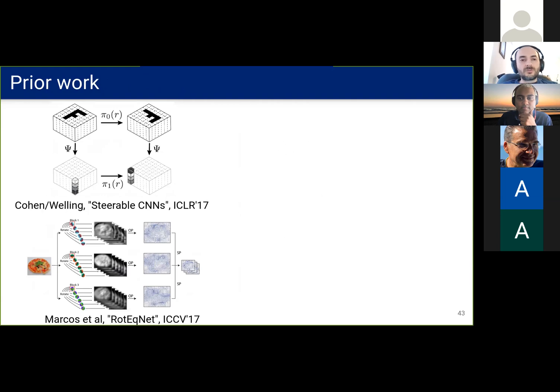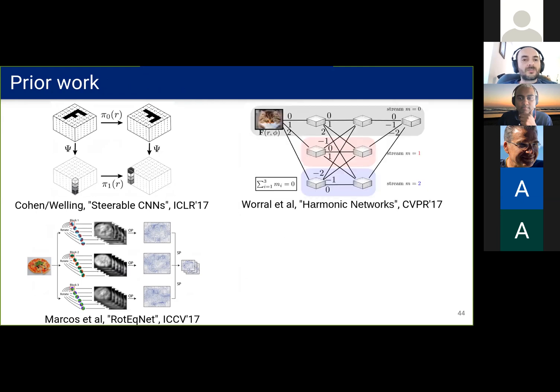Before showing results, let's see some prior work on CNNs for vector fields. Cohen and Welling and Marcos et al. show equivariant vector field processing on the plane. And still on the plane, the harmonic networks also use complex numbers that can represent vectors. It's similar in spirit to our method.